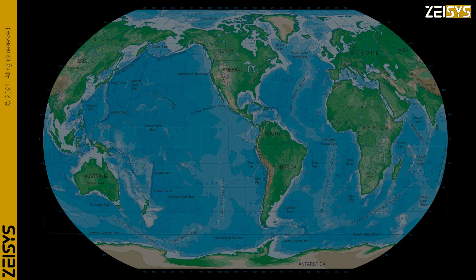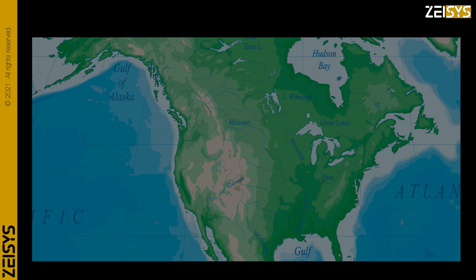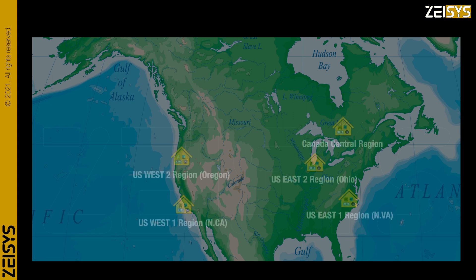Now let us examine how these data centers are organized around the globe. As of July 2021, across the world, AWS cloud has 25 regions. For example, in the North American continent, AWS has five regions — four of these are in the United States and the other in Canada.